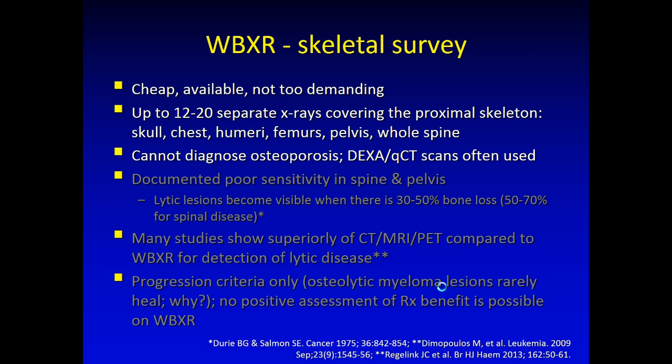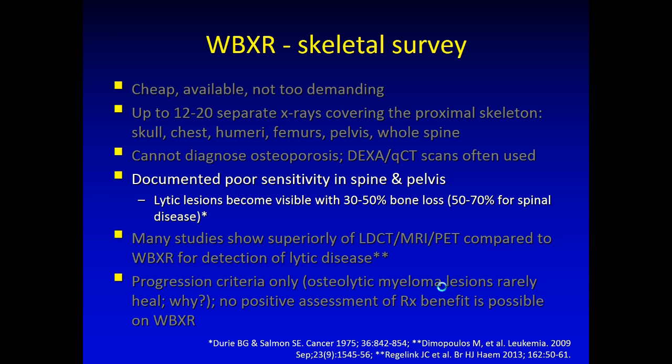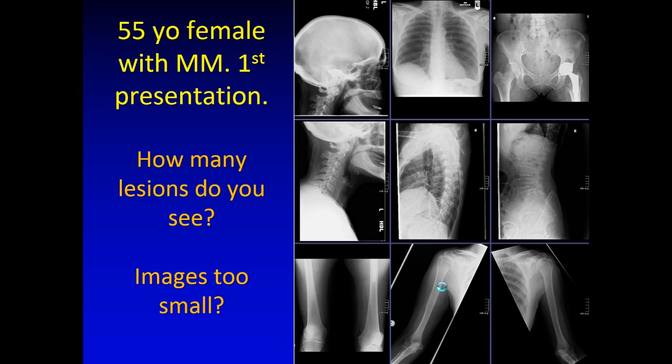The traditional way of assessing skeletal involvement was to use whole-body x-rays, involving anywhere between 12 and 20 separate x-rays, and also DEXA scans to look for osteoporosis. X-rays have a poorly documented sensitivity for the presence of lytic disease because a large amount of lytic disease has to occur before it becomes visible. When you talk about the axial skeleton, anywhere between 50 to 70 percent of bone loss has to occur before you can see it on x-rays. There are too many images and the images are too small — it's an unreasonable ask.